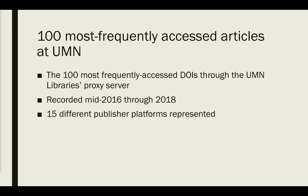Here's how I went about this. I looked at the 100 most frequently accessed articles at the University of Minnesota. We record DOIs that pass through our EZProxy server, and so I took the 100 DOIs that appeared most frequently in our EZProxy logs over a couple of years. Those 100 articles came from 15 different publisher platforms. The fact that there were only 15 platforms in the 100 most frequently used articles is its own problem worth further conversation.